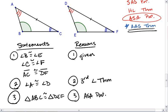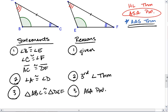That if we have two angles and the non-included side congruent to two angles and the corresponding non-included side, then the two triangles are congruent.